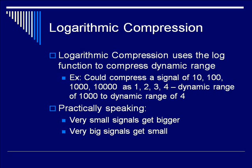That's going from a dynamic range of 1000 — from 10 to 10,000 — to a dynamic range of 4. Practically speaking, what logarithmic compression means is that small signals become bigger and big signals become smaller. So your signals get pushed closer together, but you don't lose too much information.